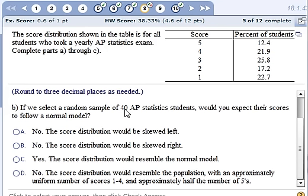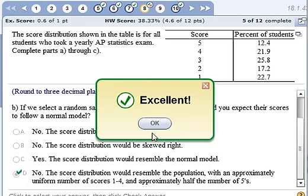Okay, now it says, if we select a random sample of 40 AP students, would you expect their scores to follow a normal model? Well, they all seem about the same, except for this number 5 is 12.4. So we would say no. It would resemble the population, which is kind of uniform, the number of 1 through 4, and then about half of those got a 5. So we would pick D here.